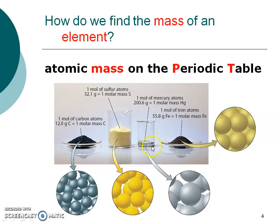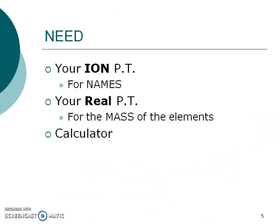Here's mercury — remember, mercury is the liquid metal at room temperature. And here we have some iron. I like this picture because it shows the inside — what do those atoms really look like on the inside of those solids and liquids? We're going to need the mass of those elements. So right now you should have out your ion periodic table because we're going to do names when we get to the practice problems, your real periodic table that has the atomic number and atomic mass for our formulas, and a calculator because we're going to add things up.